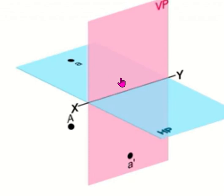That is the projection of points when placed in the third quadrant. Let's see what happens when we place an object in the third quadrant.